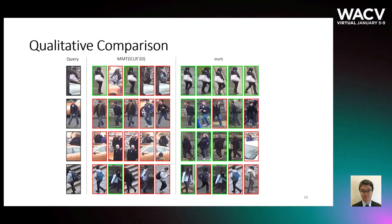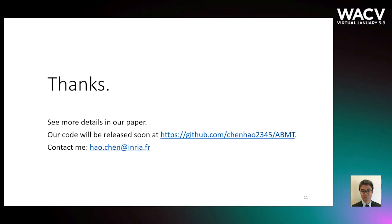In the third part, we visualized top-five retrieval images from MMT and our method. We can see MMT is prone to failure when there exists occlusion, similar poses, or similar background. Our method is generally more robust to these variations. Thank you for your attention. If you are interested in our research, please find more details in our paper. You can find my implementation code through the provided link. If you have any questions, do not hesitate to send me a message.